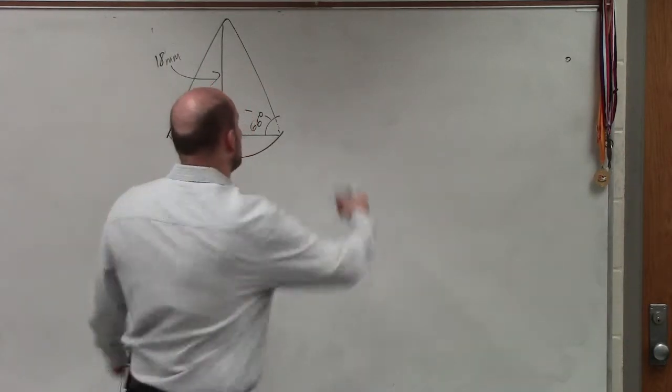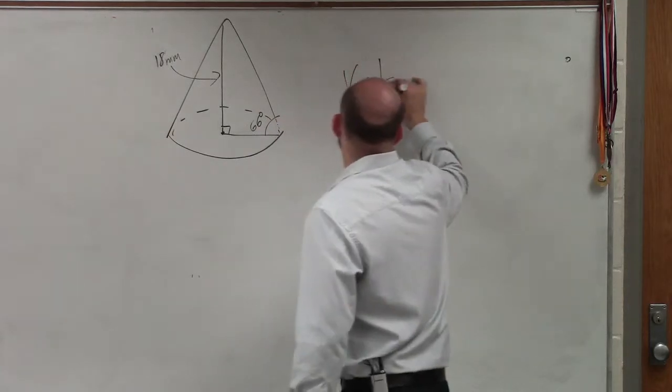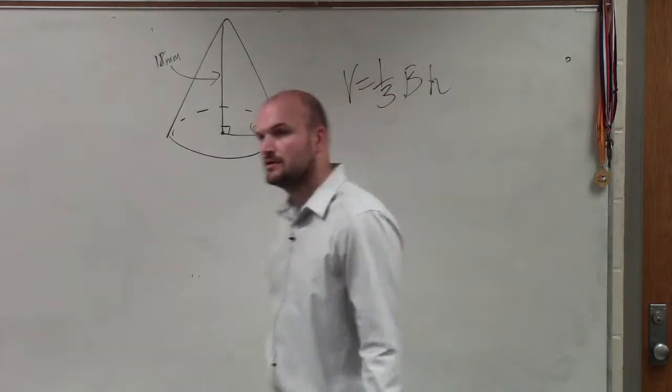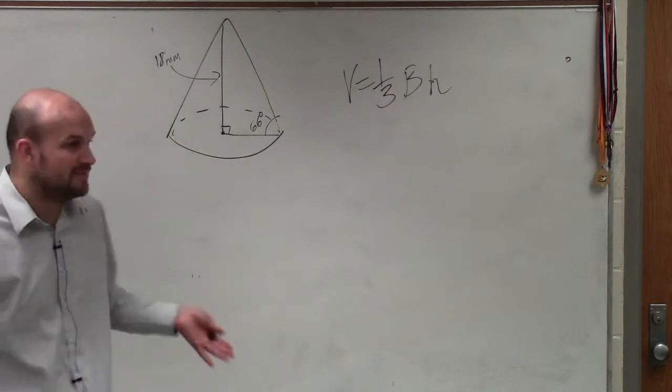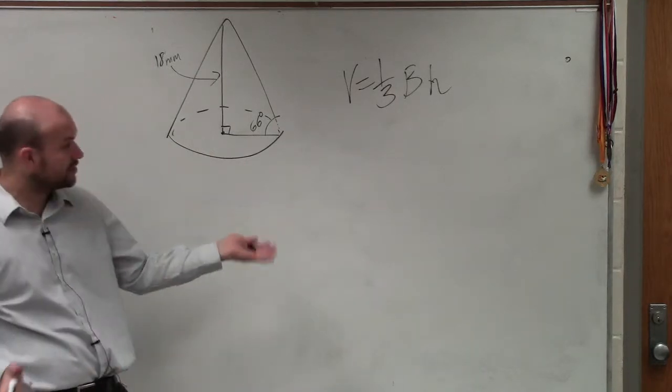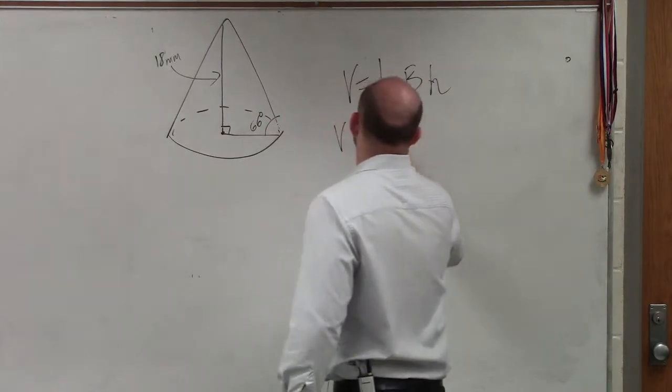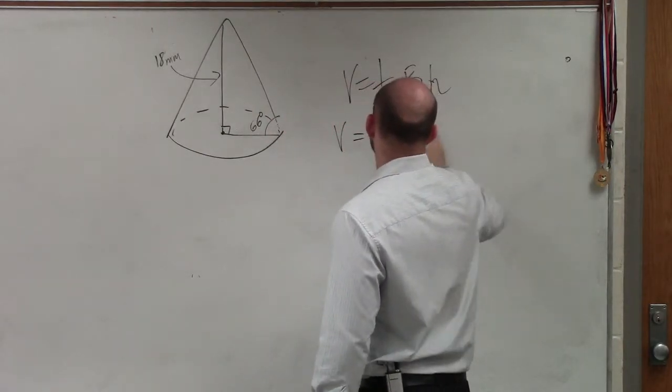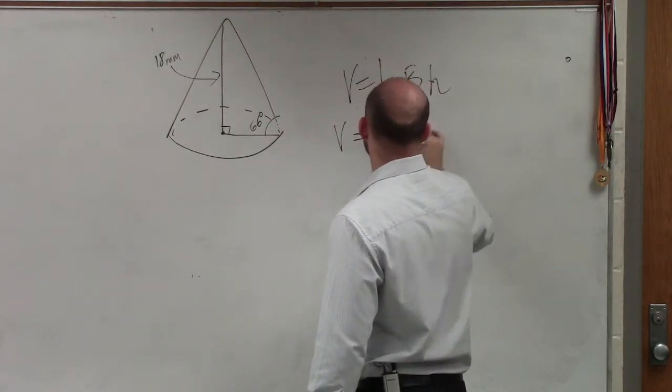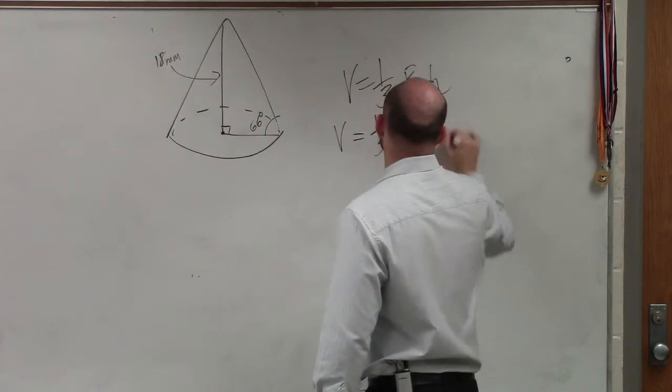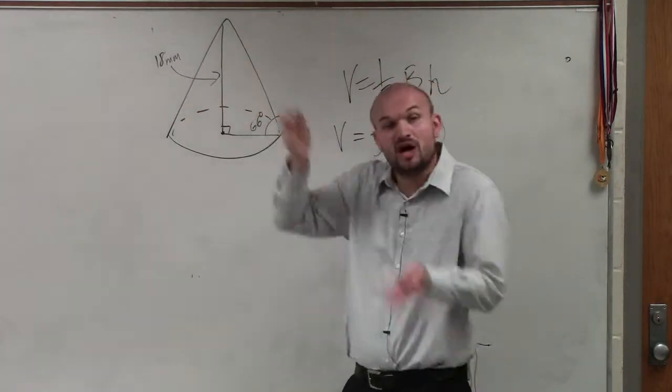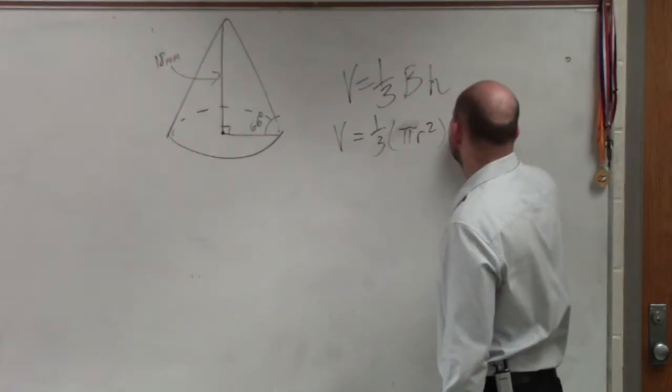All right, so to find the volume, volume equals 1 third area base times height. So we need to be able to figure out what the area of the base is. Now, since this is a circle, it's a cone, we know that the area of the base is equal to pi. So it's 1 third times pi r squared. And the height, they tell us, remember, the height is directly from the base to the top, which is 18.